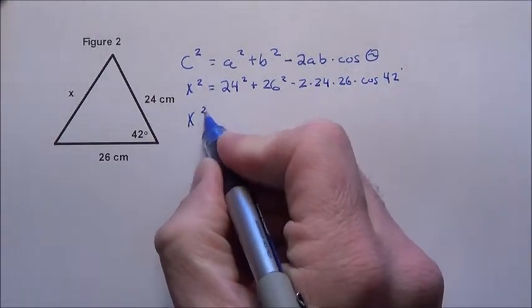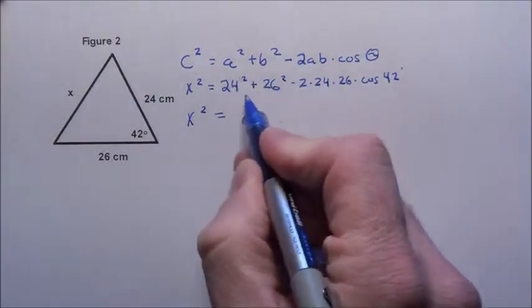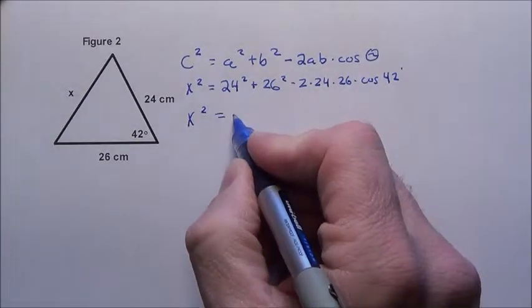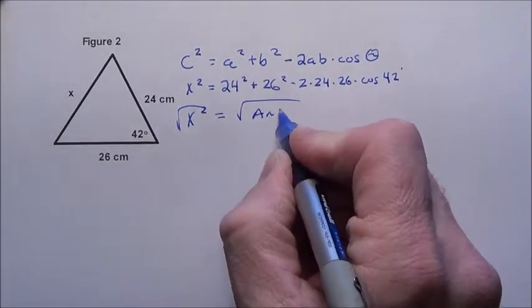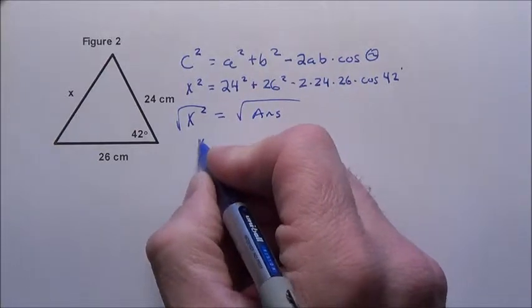So I'm going to use my calculator, get all of that, put it all in the calculator, get an answer. And then what am I going to do? I'm going to have to take the square root of whatever answer I get. Now, I did that earlier,